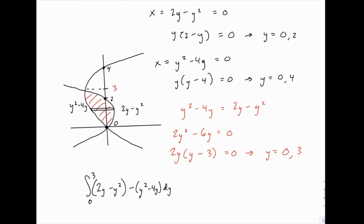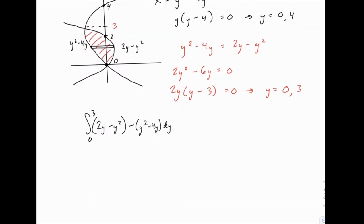To finish the problem, we just have to integrate, which is pretty straightforward. We can simplify inside the integral by combining like terms. So we have negative 2y squared plus 6y. Pay attention to the negative signs. That's one little area where you can get tripped up. But otherwise, everything is pretty straightforward. Integrating negative 2y squared, you get negative 2 thirds y cubed. Integrating 6y, you get 3y squared.